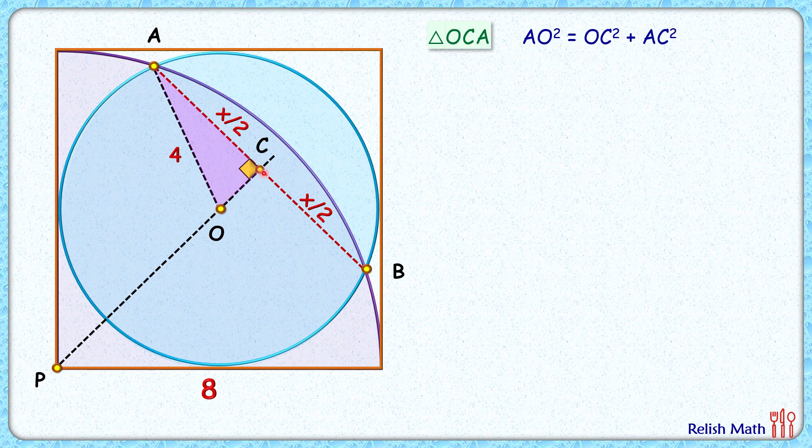Let's assume OC length is Y cm. Putting these three values in the equation we will get 4² = Y² + (X/2)². Now we have got two variables, so we need one more equation to get the value of X.